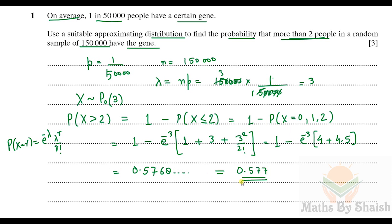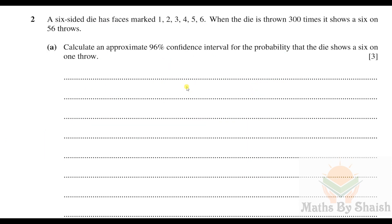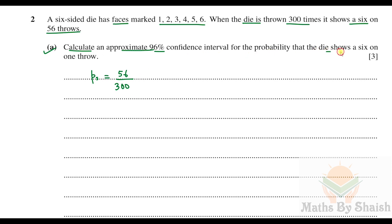Question 2: A six-sided die has faces marked 1, 2, 3, 4, 5, 6. When thrown 300 times, it shows a 6 on 56 throws. So the sample proportion p̂ = 56/300. We need to calculate an approximate 96% confidence interval for the probability that the die shows a 6 on one throw. We also calculate q̂ = (300 − 56)/300 = 244/300.